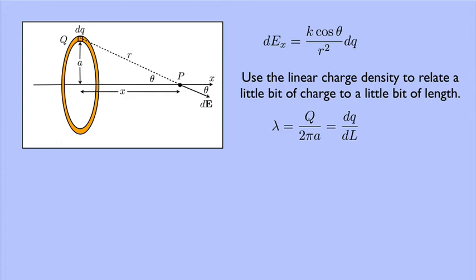And that equals a little bit of charge over a little bit of length, dq over dl. I can rewrite this as dq equals q over 2 pi a dl, and then I can substitute that in.